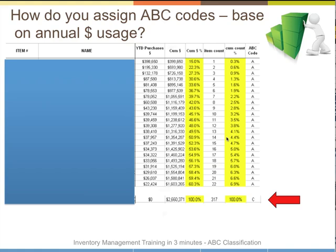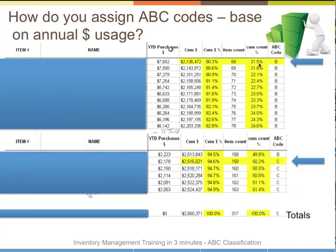Going to the next slide, you can see the natural break point. The B classification kicked in around the 68th item — that's 68 out of 317, or 21% of items — and they represented 80% of the sales, which is $2.1 million out of $2.6 million. That's the classic textbook 80-20 applying in a real-life environment. When you get to item 159 out of 317 — 50% of items — that represents 94% of purchases, $2.5 million of $2.6 million. So this company has a large number of items with very low purchase value.